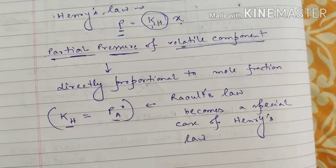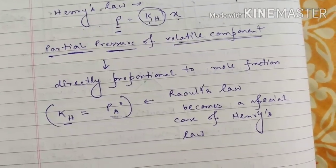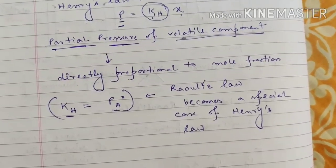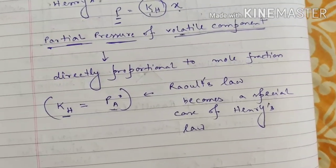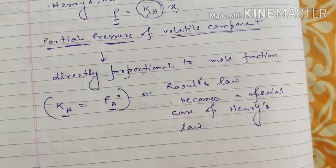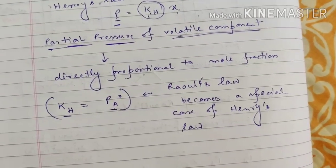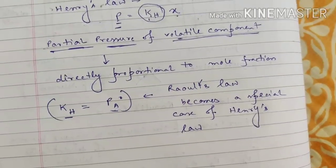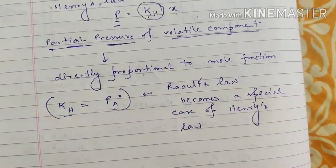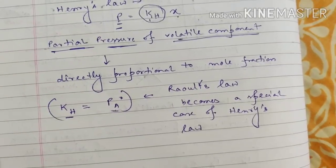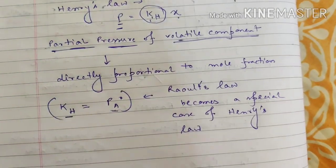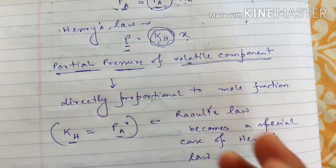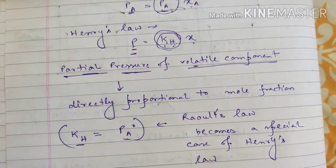Both Raoult's law and Henry's law are applicable to the volatile component. Raoult's law defines the proportionality constant as the vapor pressure of the pure component, whereas Henry's law defines the proportionality constant as an experimentally determined quantity, kH. So both laws are in accordance with each other.